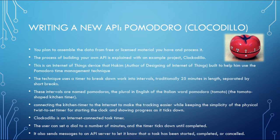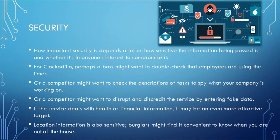The process of building your own API is explained with the case study of Clockodillo. This is an IoT device built to help use the Pomodoro time management technique. The technique uses a timer to break down work into intervals — traditionally 25 minutes in length — separated by short breaks. These intervals are named Pomodoros, from the Italian word for tomato. Clockodillo is a simple kitchen timer with internet connectivity to make tracking easier while keeping simplicity in physical design.